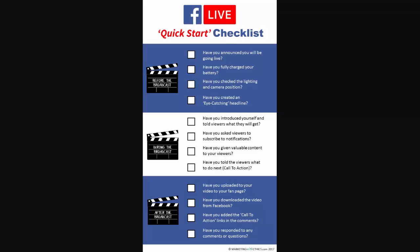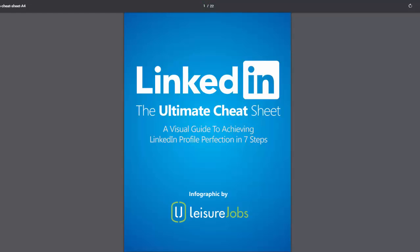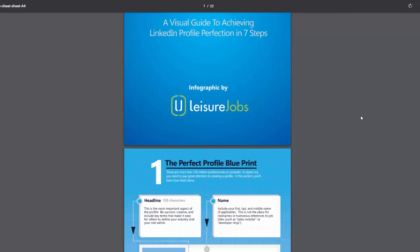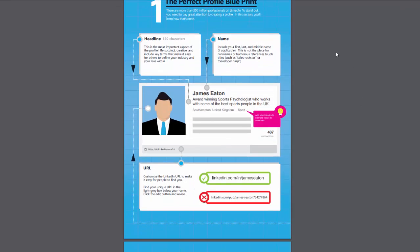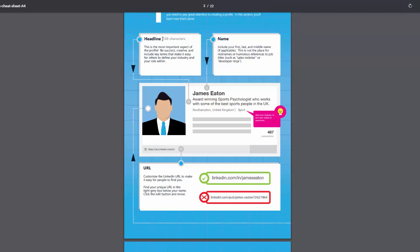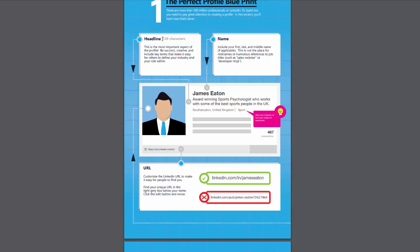If you want to get a little bit more in depth you could look at a cheat sheet which gives you all information in one place. This example here is the ultimate cheat sheet for LinkedIn and as we scroll through you can see this is actually 22 pages long so it's much more in depth. It's very visual, very colourful but gives you the information for each little section so that everything you need to know for LinkedIn you can get from this one place.